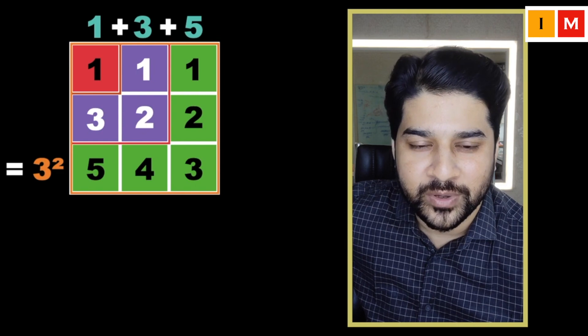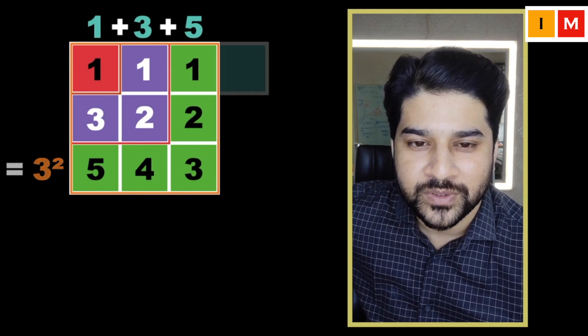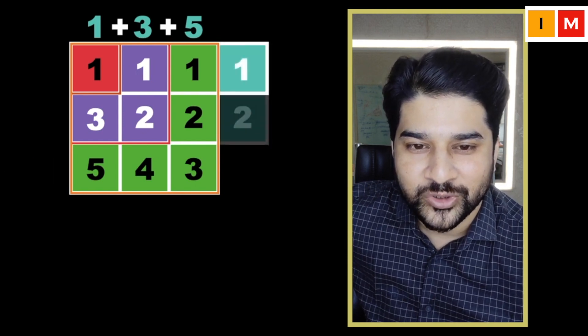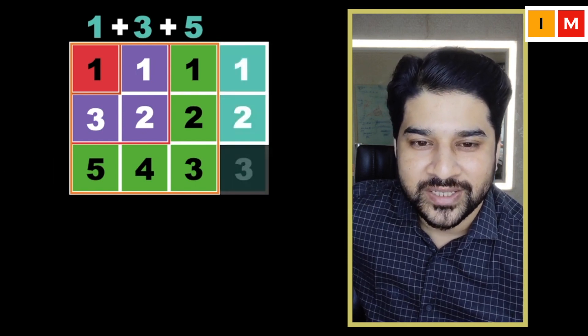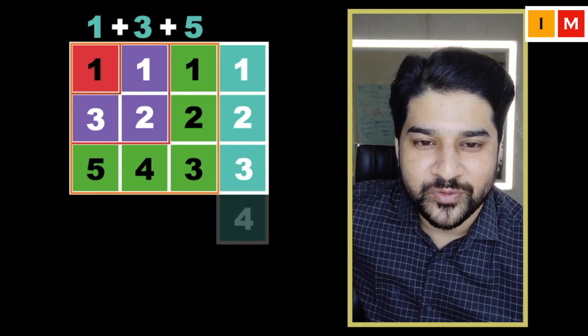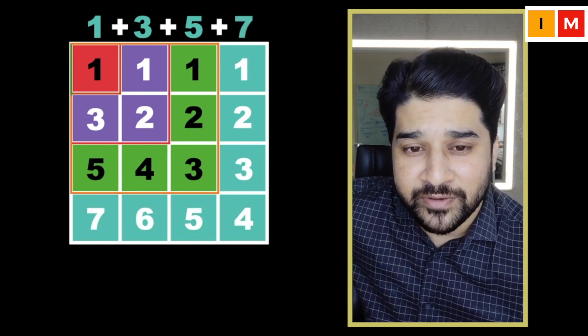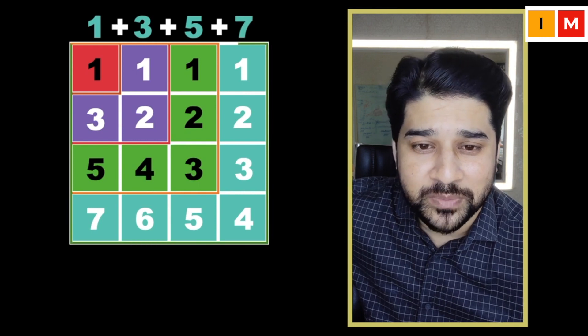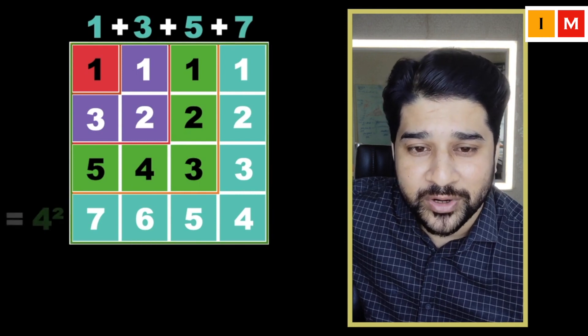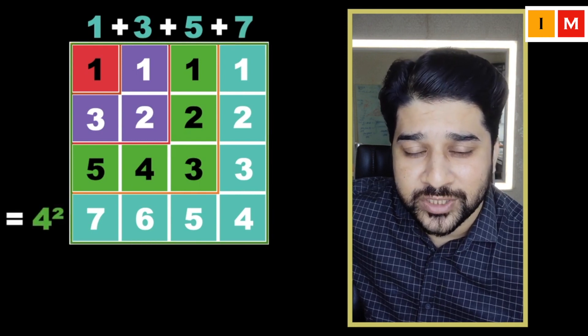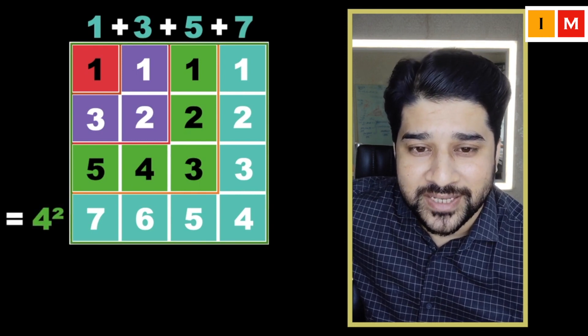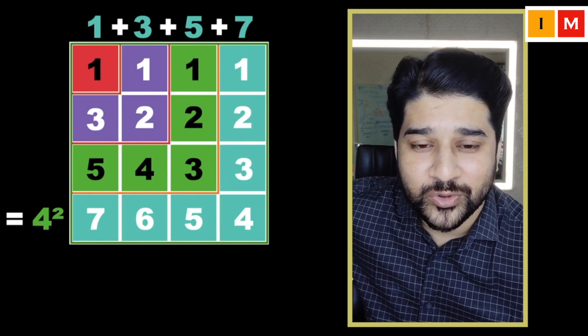Now let's say we want to build a square of 4 by 4, so we have 1, 2, 3, 4, 5, 6, 7 — so we needed 7 more squares to build a bigger square of 4 by 4, which is 4 squared.